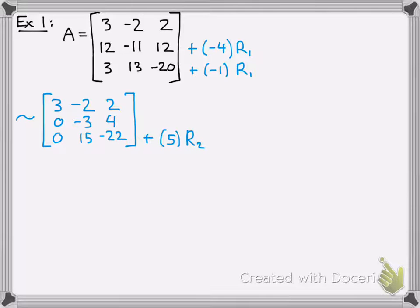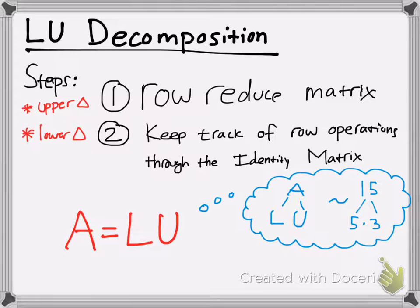Do it again. You want to make sure that every pivot has 0 below it because you're getting an upper triangular matrix. This should be self-explanatory. I'm just going to kind of go through it from now on. So you have your upper triangular matrix. That's your U. Now how do you get that lower triangular matrix? Well, go back to the directions. Keep track of row operations through identity matrix.